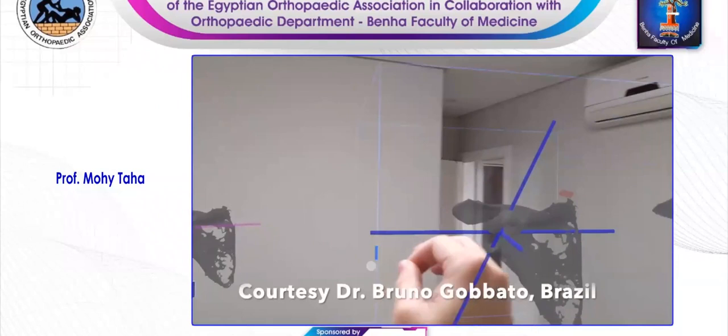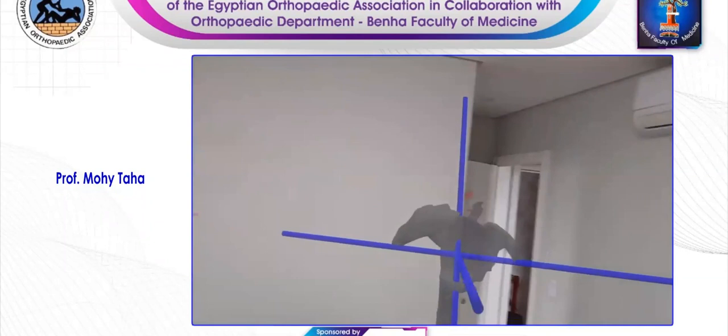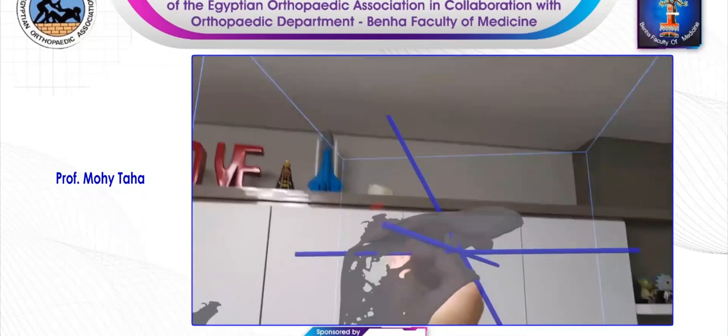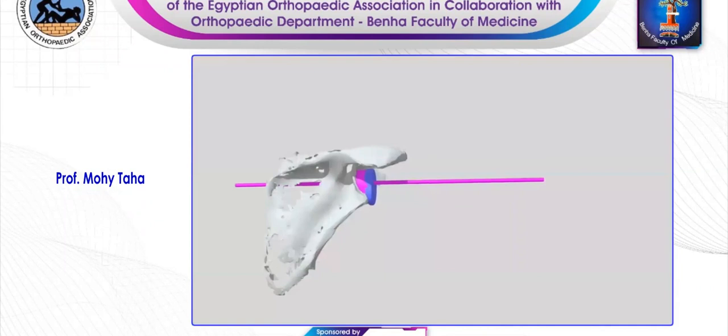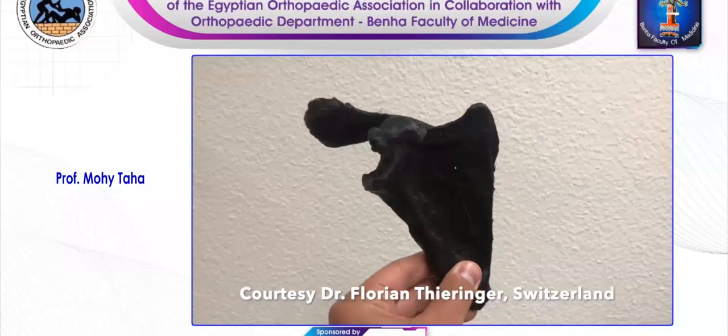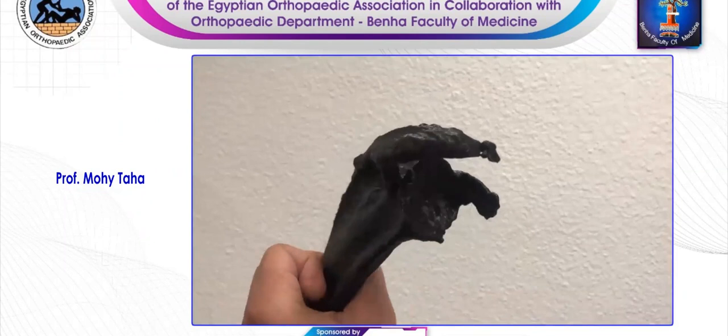Dr. Gabato from Brazil helped out creating the augmented reality reconstruction of the CT so that we can take a deeper look into the case. Moreover, he was kind enough to plan the bone graft for us. Dr. Thieringer helped us by printing the scapula 3D so we can take it into the operating theater.